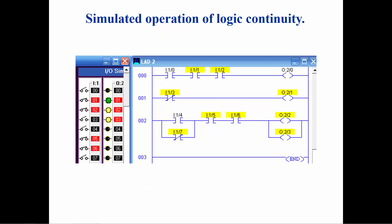In this simulation you will see multiple variations of the use of the examine if closed and the examine if open instructions. Eight different input switches are being used by the instructions. Rung 0 will only have logic continuity to the output instruction when all three of the switches addressed by the examine if closed contacts are closed. The yellow highlighting indicates logic continuity through the instruction. Rung 1 only has an examine if open contact; in order to have logic continuity, the instruction needs to be true, which occurs when the switch at I colon 1 slash 3 is open.